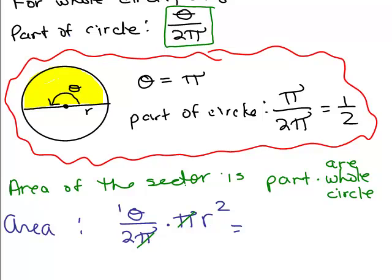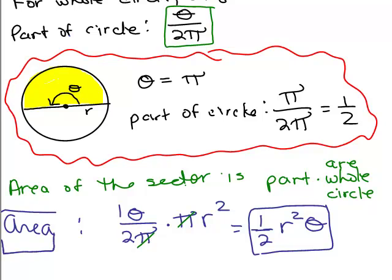It can be written as, see this 2 here? I can think of this as 1 half. And we've got theta times R squared. A lot of people write it as R squared theta. And this is the area formula.